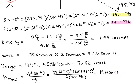To get t/2, we took 0 meters per second and subtracted that from 19.4 meters per second and divided that by negative 9.81 meters per second squared. You end up with 1.98 seconds. To get time, you multiply that by 2, which gives you 3.96 seconds.